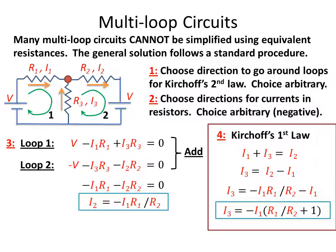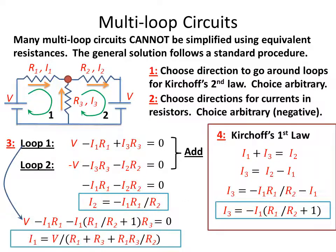Now if we find out what I1 is, we'll know what I2 and I3 are. So we go back over to the first loop, bring it down, so we have V minus I1, R1 plus I3, which we brought over from the other side, times R3 is equal to 0.